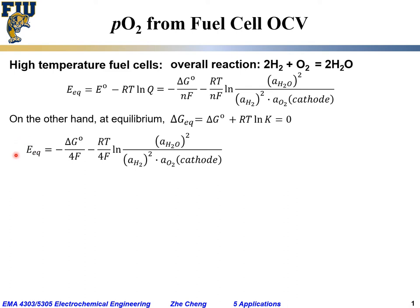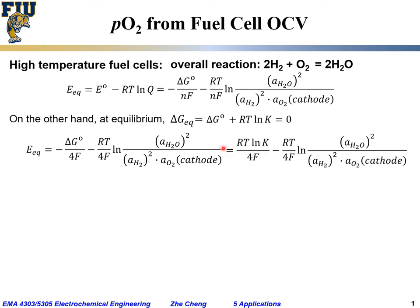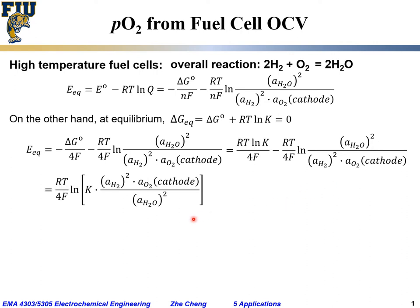The equilibrium cell potential would be RT log K. We rewrite this equation — delta G0 written here — and since minus delta G0 becomes RT log K, the equilibrium cell potential becomes RT log K over 4F minus RT over 4F times the natural log of the reaction quotient. We can simplify by factoring out RT over 4F, giving us the natural log of K times the inverse of the reaction quotient.